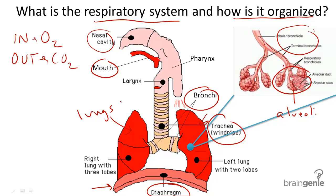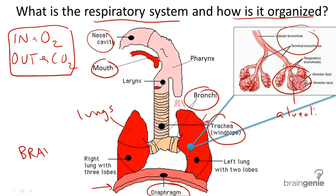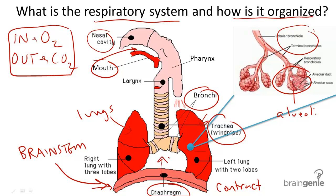So how does the respiratory system work? In order to take in oxygen and breathe out carbon dioxide, we get a message from the brainstem, inside the brain, for the diaphragm to contract. As this diaphragm contracts, it forces air into the mouth or nasal cavity and increases the ability for air to enter the alveoli in the lungs.